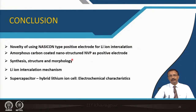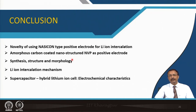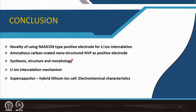In conclusion: the novelty of using NASICON-type positive electrode for lithium-ion intercalation — remember the source of lithium here is entirely the electrolyte, since there is no lithium in the positive part and none in the negative part initially. Amorphous carbon-coated nanostructured NVP was used as a positive material — how they are synthesized, their structure and morphology was covered. The exact lithium-ion intercalation mechanism in this material was explained. Finally, the electrochemical characteristics of the supercapacitor and hybrid lithium-ion cell in half-cell configuration were presented. Thank you for your attention.